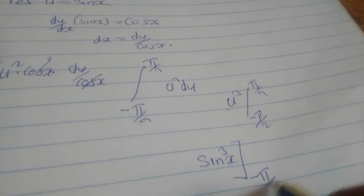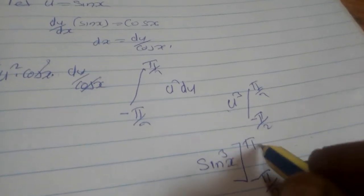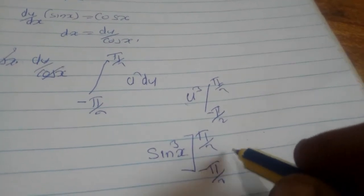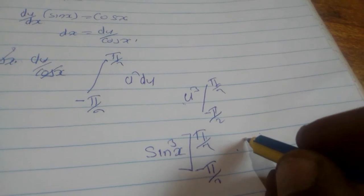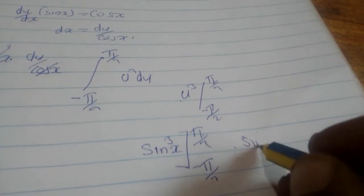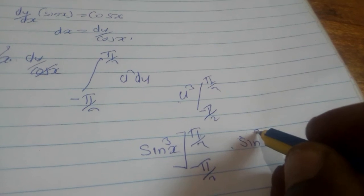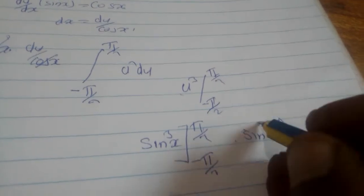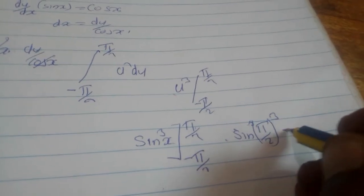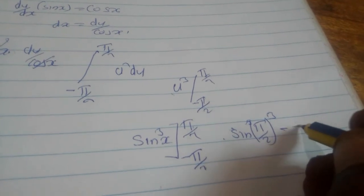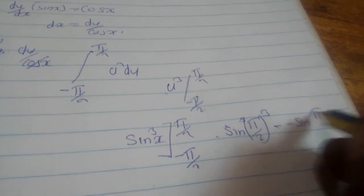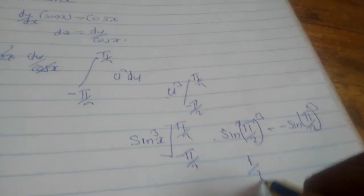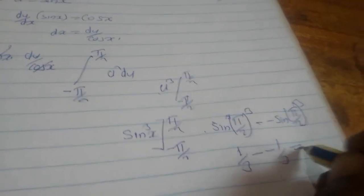From negative π over 2 to π over 2. For this one you can substitute with π over 2. You are going to say sin³(π/2) over 3, which gives you 1/3 minus negative 1/3, which equals 2/3.